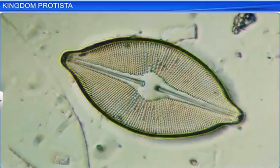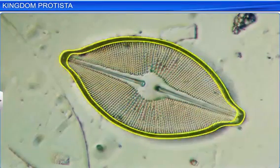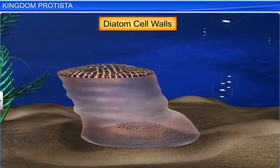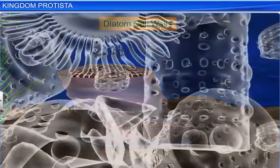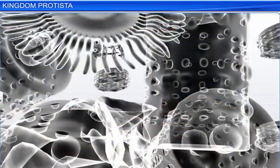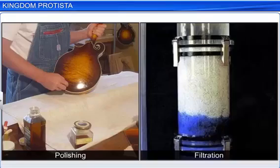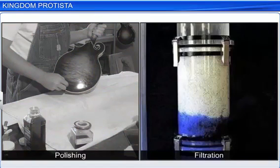Diatom cell walls are embedded with silica, making them indestructible. Diatoms therefore manage to leave behind a large amount of their cell wall deposits in their habitats. These fossilized remains of Diatoms form Diatomaceous Earth. It can be put to various uses like polishing and filtration of oils and syrups.